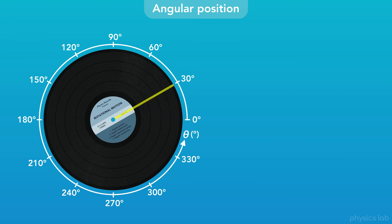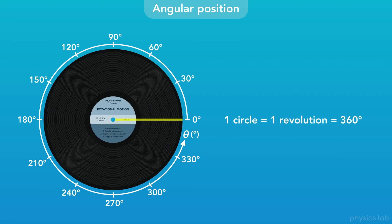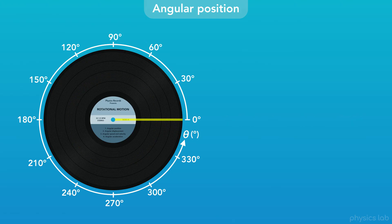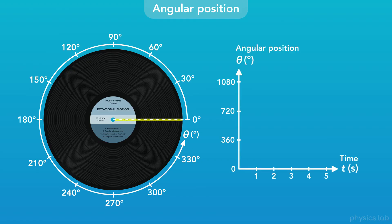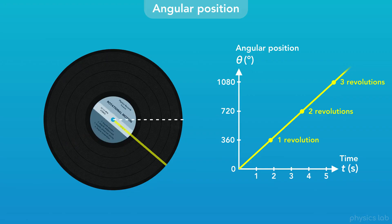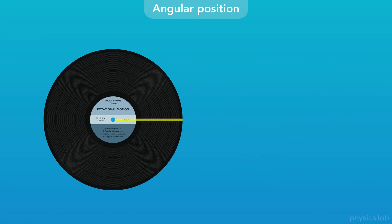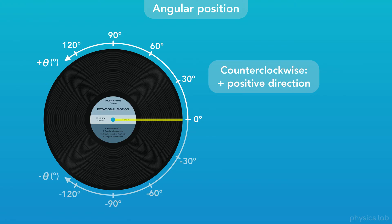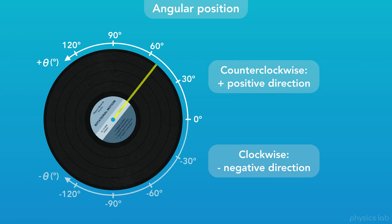What would be the angular position of the record if it rotates a full revolution? There are 360 degrees in a circle, so if we follow the record's motion from the start, then the final position would be 360 degrees. What happens if the record keeps rotating? Here's a graph of the angular position versus time. Just like with circular motion, the angular position doesn't reset back to zero — it keeps increasing as the record rotates. And if the record rotates the other way, we establish a positive and negative direction. Counterclockwise is considered the positive direction, and clockwise is considered the negative direction. The record can rotate as far as it wants in either direction, and we measure its angular position relative to the zero point we established.